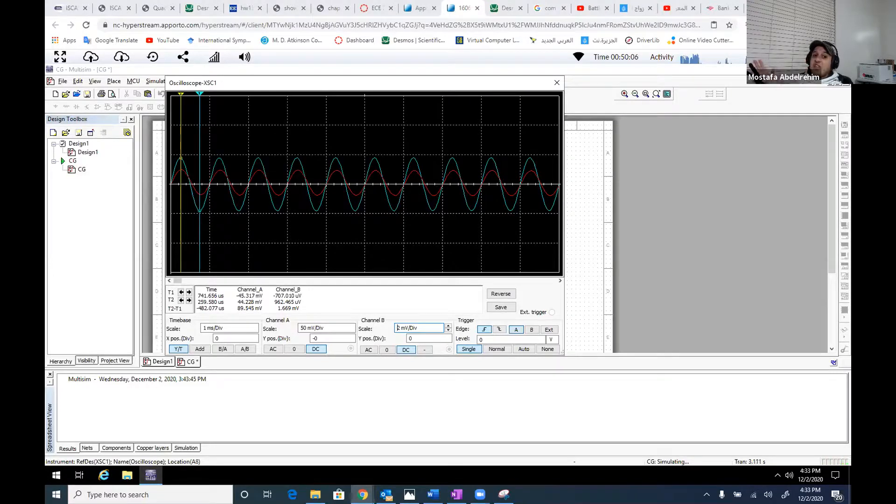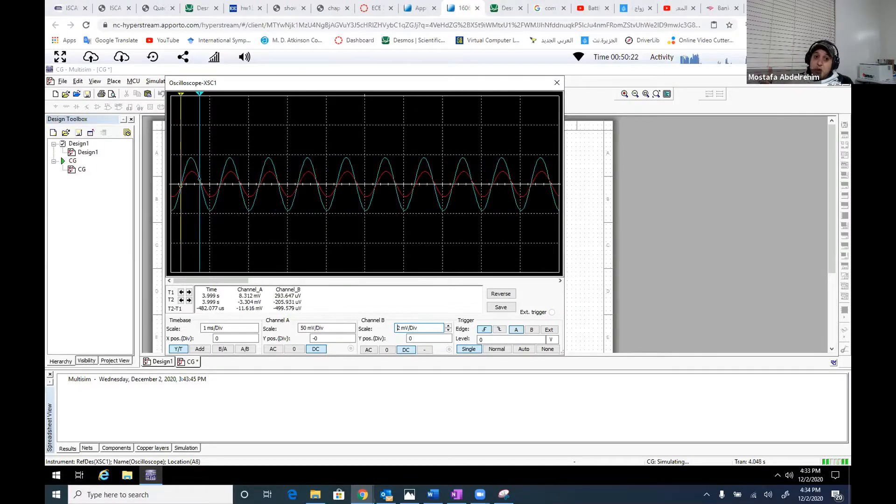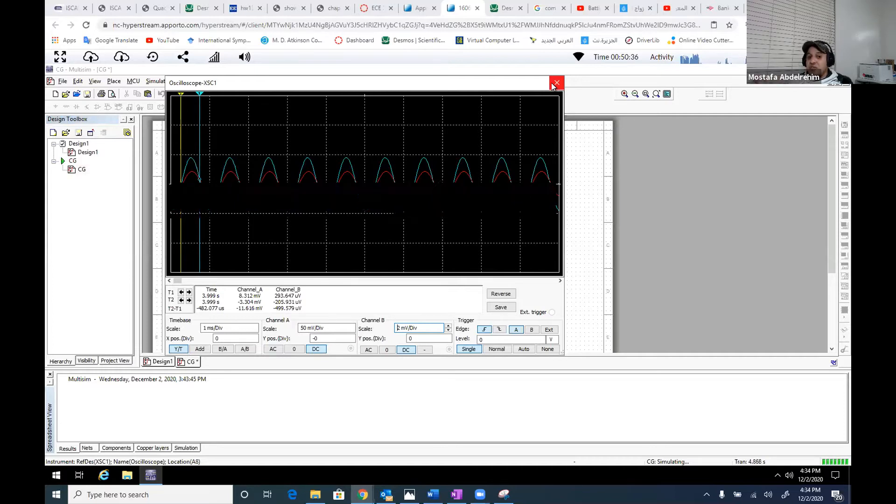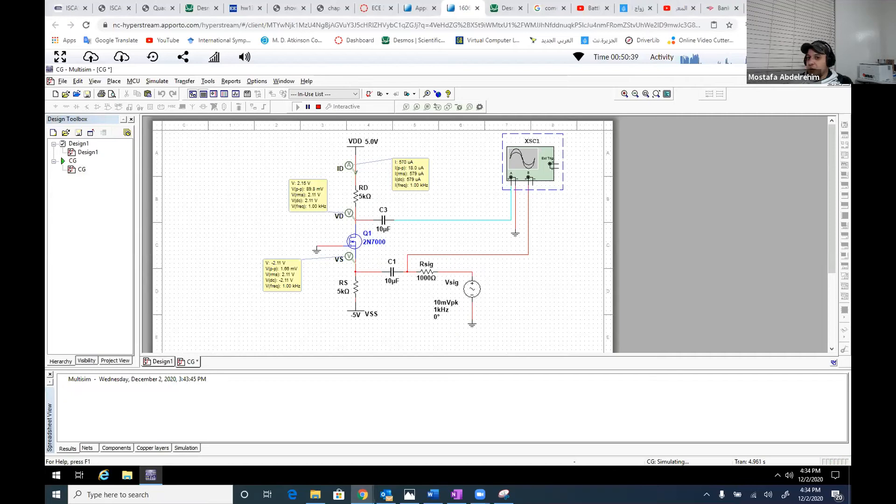Okay guys, so this is basically the common gate amplifier. We checked now in this experiment the effect of its low input resistance. This configuration, the common gate, is really sensitive to R signal. If R signal is big, the amplification will be reduced. Thank you very much guys, and have a good day. I was really happy during this semester teaching you this lab, and I hope you get benefit out of that. Thank you very much, bye-bye.